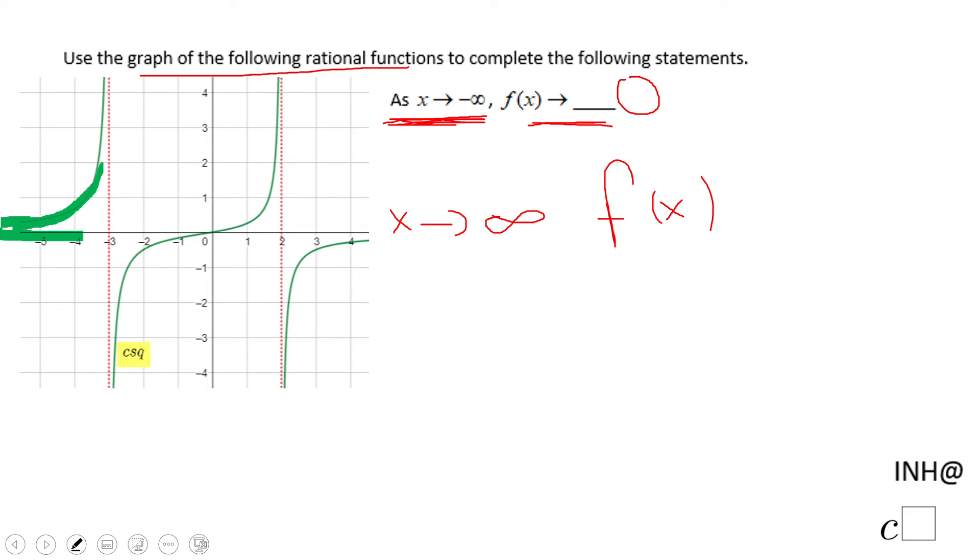Look at here, when x is getting larger and larger, that's what this means. The function is also getting closer and closer to zero, closer and closer to the x-axis. So it's going to be the same statement: f(x) is approaching zero.